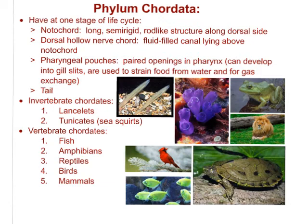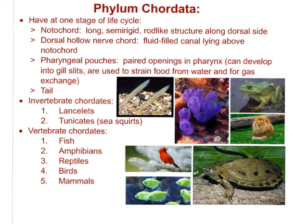There are both invertebrate chordates and vertebrate chordates. Invertebrate chordates include lancelets and tunicates or sea squirts — you've probably seen pictures of tunicates and not known what remarkable organisms they are. Vertebrate chordates you should be very familiar with. There are five: fish, amphibians, reptiles, birds, and mammals. Those are the five vertebrate chordates in the animal kingdom, and that brings us to where we belong in the mammalian class of the phylum Chordata.